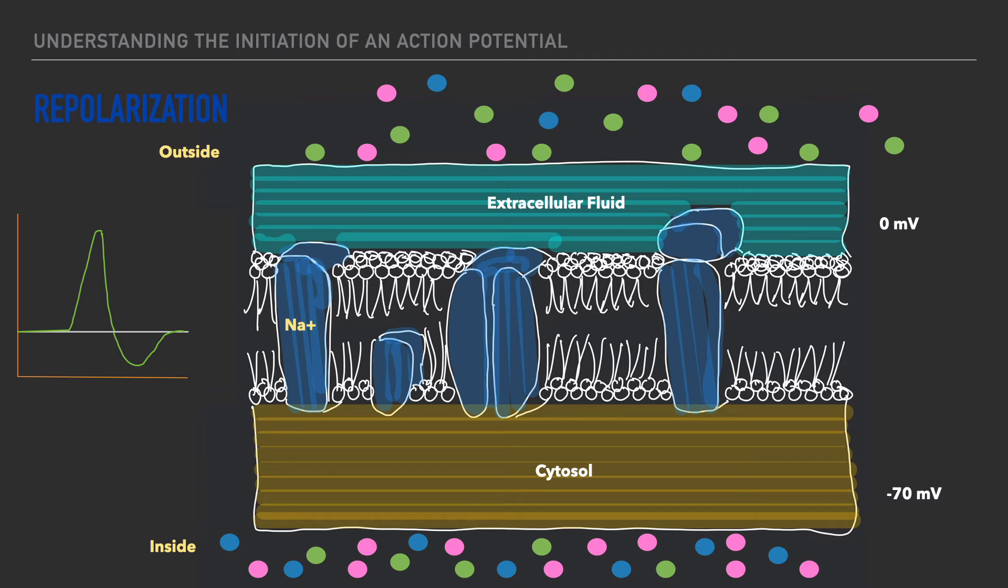Now, as the inside of the cellular membrane becomes more positive and again approaches the value of zero millivolts, it will continue becoming more positive, but it will peak at roughly 30 millivolts. And once the peak is reached, the sodium-gated channels close, and the potassium channels shown here open, allowing potassium to exit the cell.